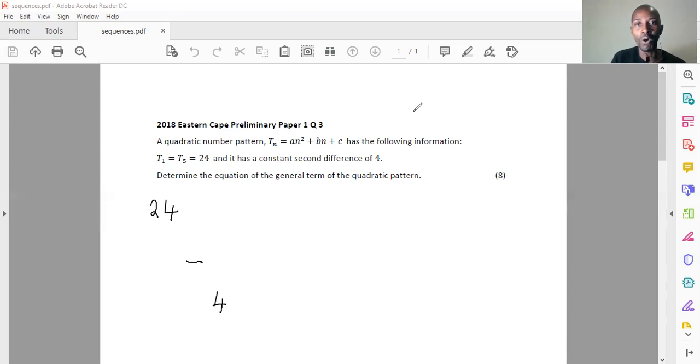What we do know when you're looking for the general term of the quadratic pattern is that this 24, this first term of the quadratic, corresponds to a plus b plus c. While this one here, the first term of the first difference, corresponds to 3a plus b. Then the second difference always corresponds to 2a. So if we were to play around with this, we'd say to ourselves, 2a is equal to 4. So now I know what a is. A in this case is equal to 2. That's a very important thing to understand.